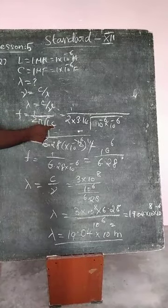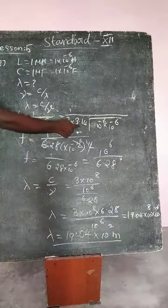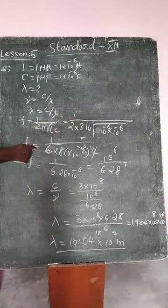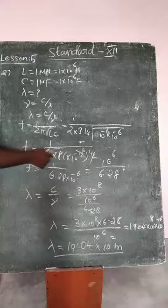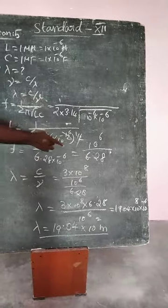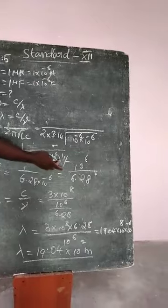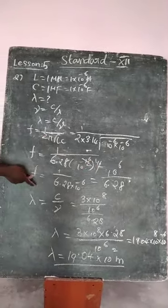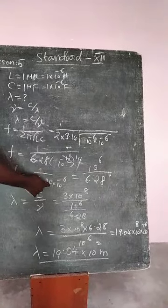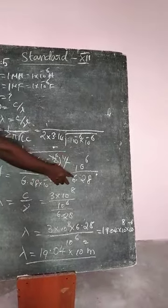Substitute L value and C in this equation: 1 by 2 pi, 3.14, root of L 10 power minus 6, C 10 power minus 6. Frequency f equals 10 power 6 by 6.28.